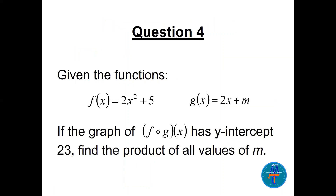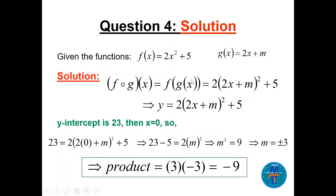Question 4: given f(x) = 2x²+5 and g(x) = 2x+m, if the graph of f∘g has y-intercept 23, find the product of all values of m. We compute f∘g by substituting g into f: 2(2x+m)²+5. At y-intercept, x=0, so y=23. This gives 2m²+5=23, so m²=9, meaning m=±3. The product is -9.